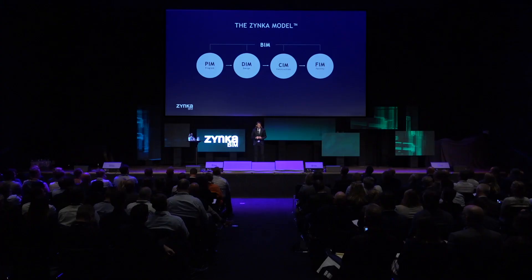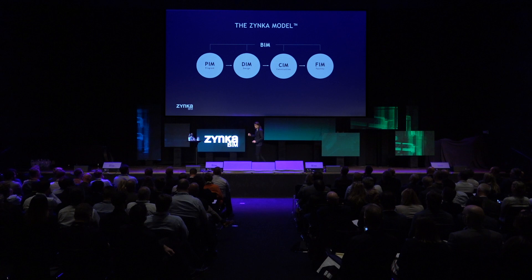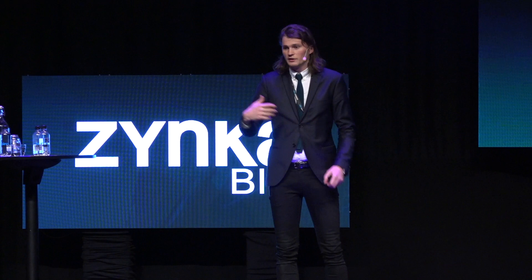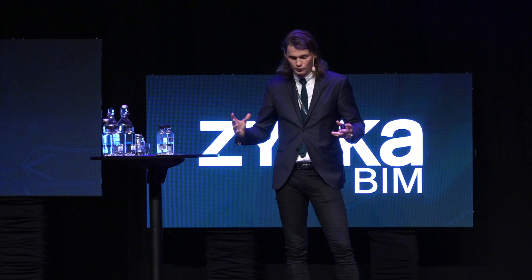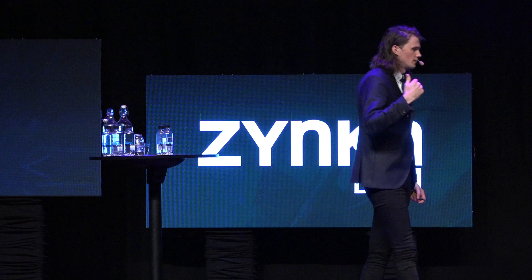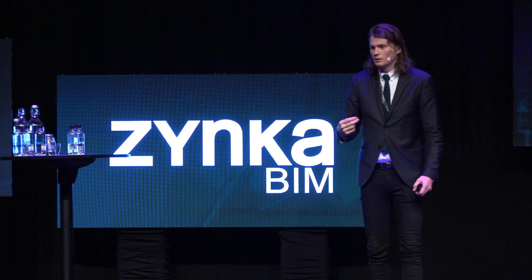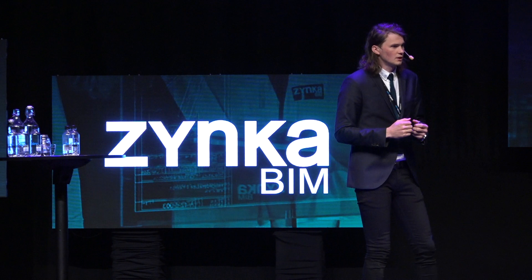The second stage is the design phase, which we call Design Information Model. Here it's all about coordination — coordination of the project management team, the design team, and coordination with the contractors. The third stage is the Construction Information Model, the kind of information model we use on construction sites together with large entrepreneurs in Sweden today. This is probably the stage where we need to make the most changes within our existing processes. We need to make construction sites turn into assembly lines.